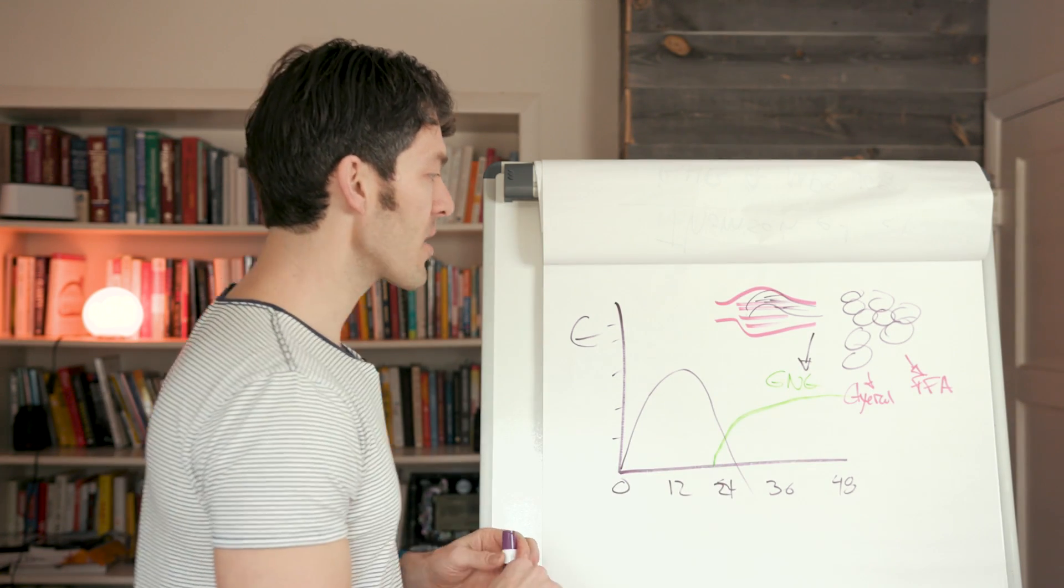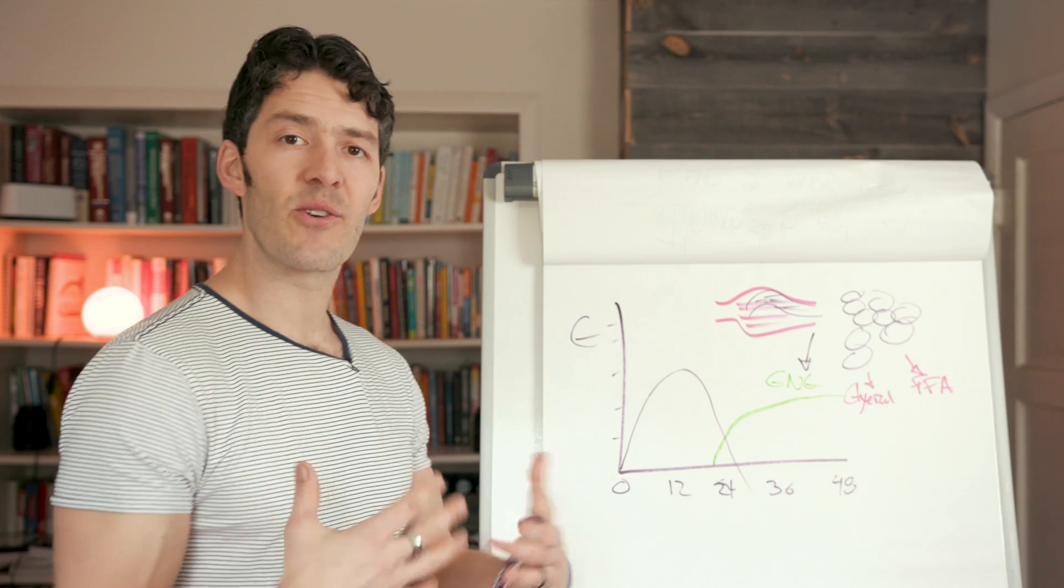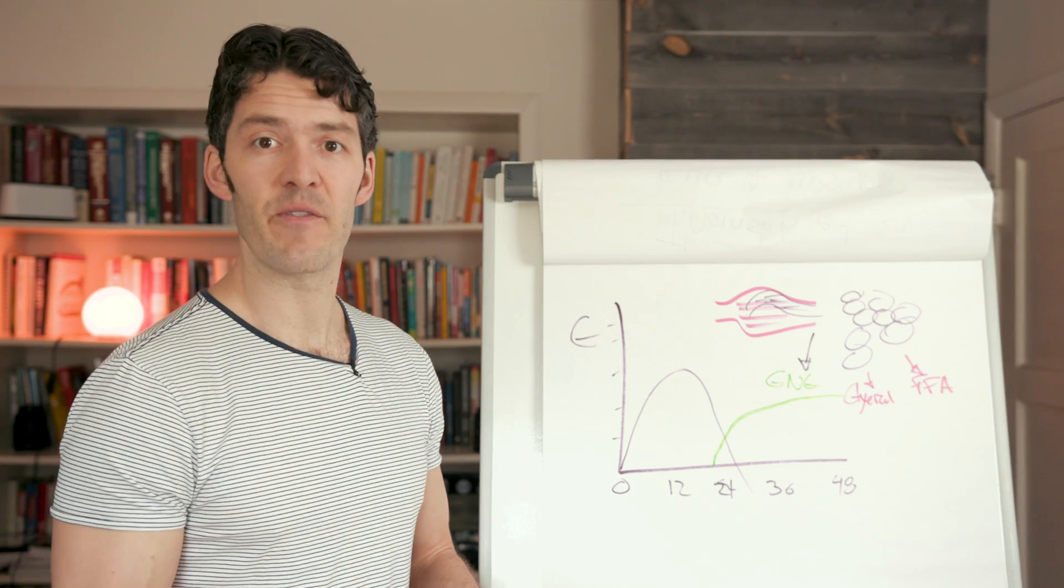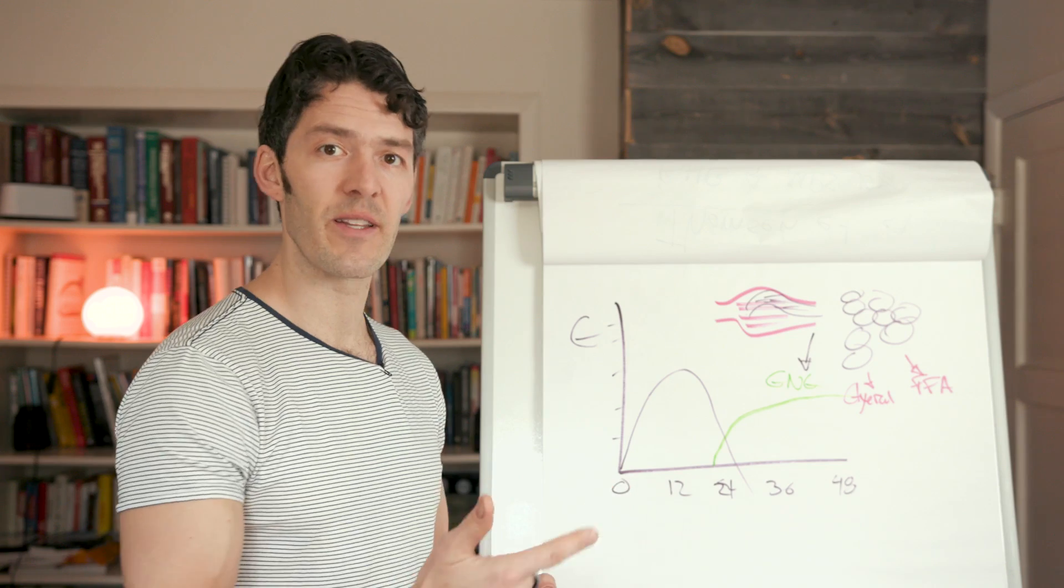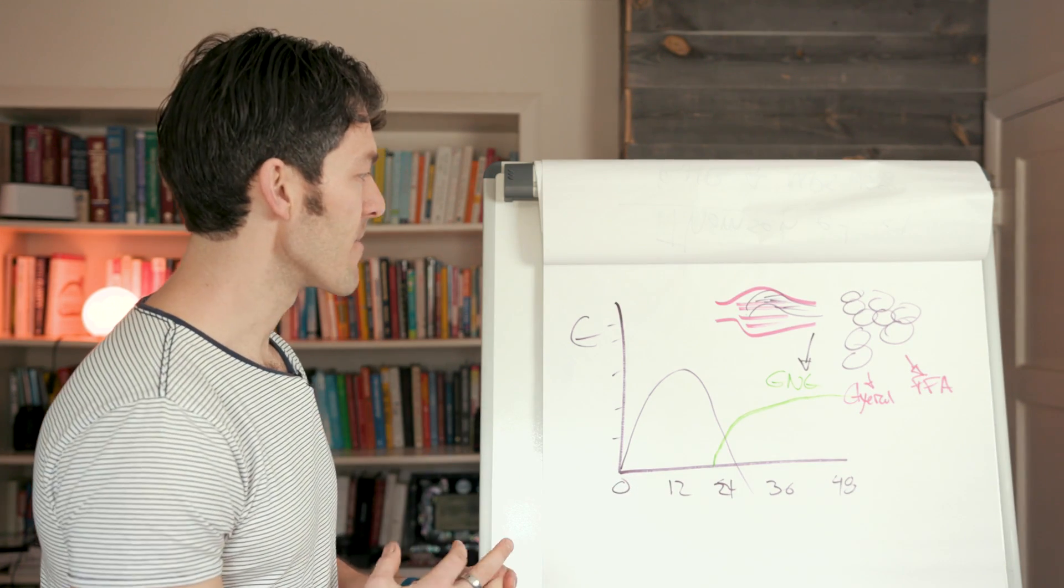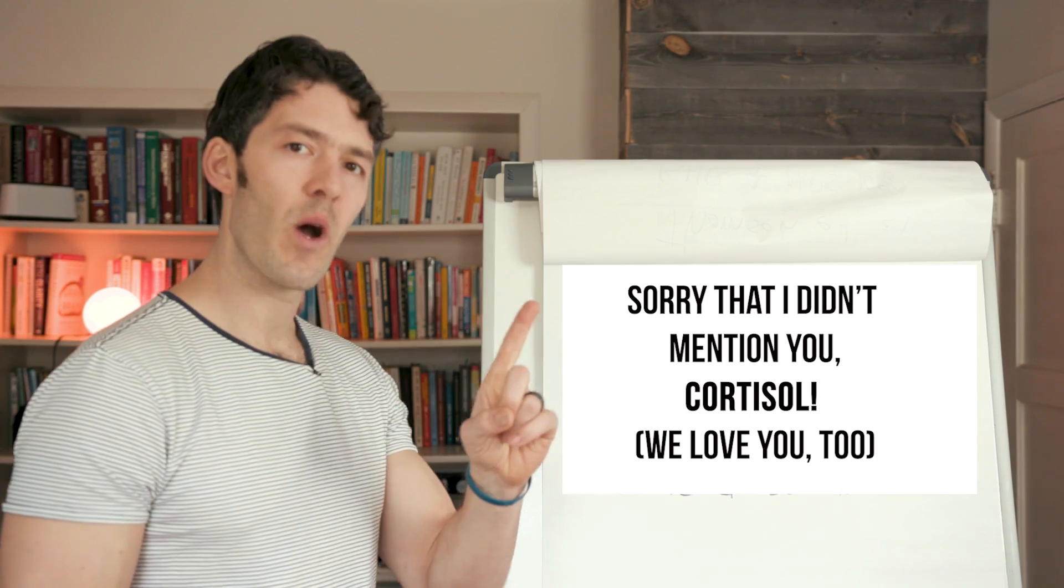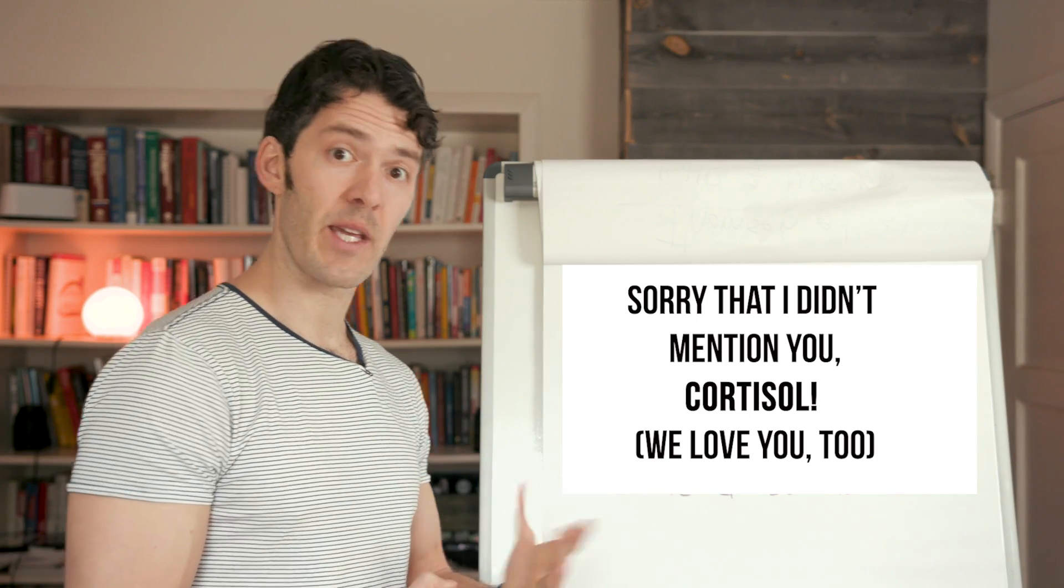Now, remember, part of this is GNG, gluconeogenesis. So the body is great at making glucose from anew, and that's where there's five different hormones - adrenaline, noradrenaline, growth hormone, glucagon - there's all these hormones to raise glucose, and there's only one to lower it. Think about that. It's kind of interesting, insulin.